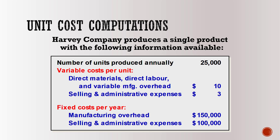Let's go through an example. A hardware company produces a single product. The number of units produced annually is 25,000. Under variable cost per unit: direct materials, direct labor, and variable manufacturing overhead per unit cost $10, and selling and administrative expense per unit is $3. Fixed manufacturing overhead per year totals $150,000 and fixed selling and administrative expense is $100,000.